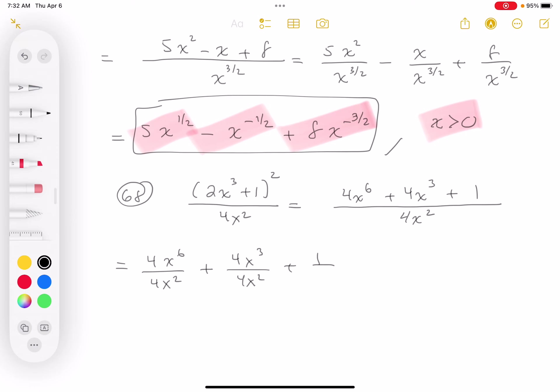4 divided by 4 is 1, x⁶ divided by x² is x⁴. Plus 4 divided by 4 is 1, and x³ divided by x² is going to be x.